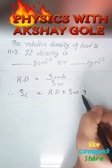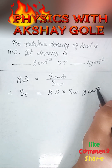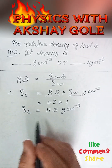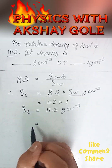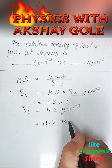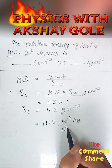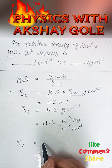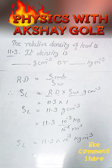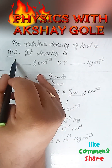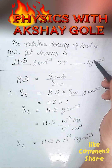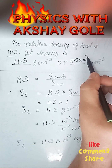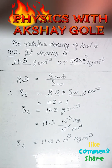This value is given in gram per centimeter cube. Let's convert it into SI unit. So density of lead in SI unit: the values are 11.3 gram per centimeter cube, or 11.3 into 10 raised to 3 kg per meter cube.